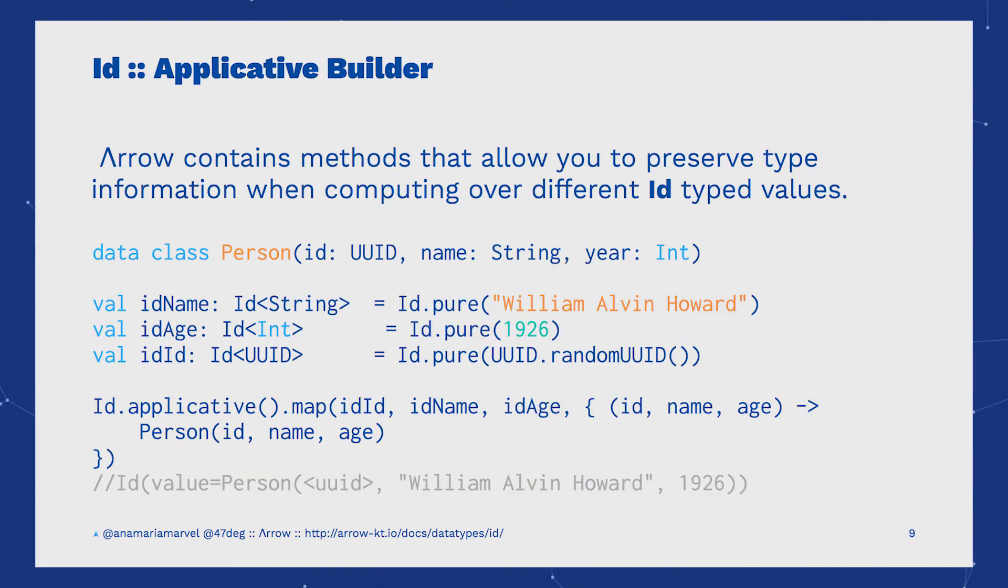We can use the Applicative Builder to compute over different values of ID that are independent from each other. With the Applicative Builder, we can map or convert into tuples a set of operations, preserving the type information and their arity.